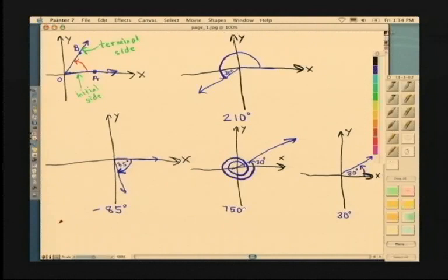Some vocabulary. We will refer in this course to the phrase coterminal angles. Coterminal angles are two angles that share the same terminal side. So what would be an example of coterminal angles? 750 degrees and 30 degrees. They are coterminal angles.